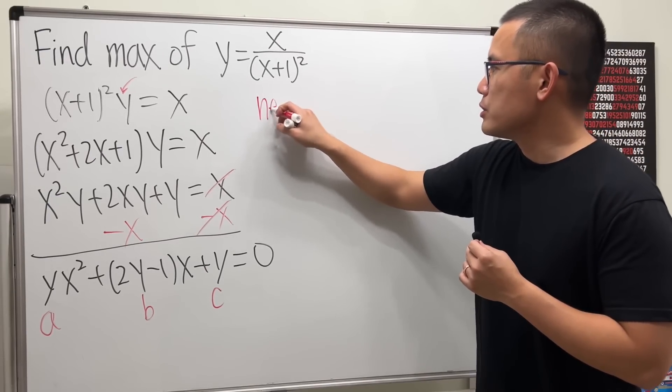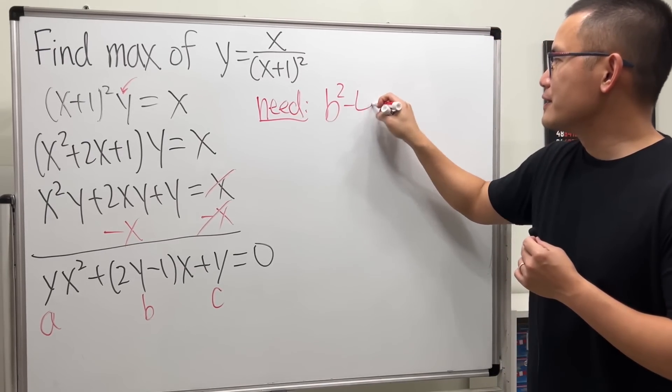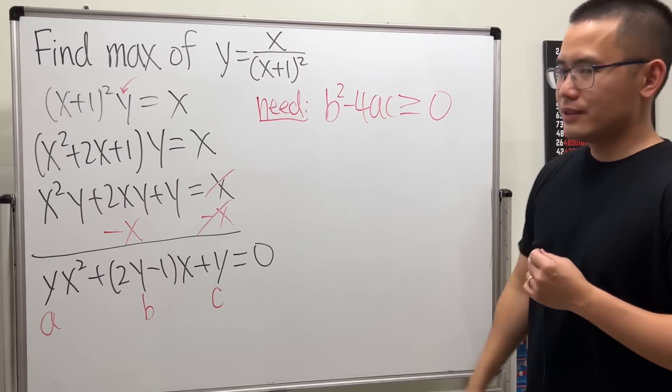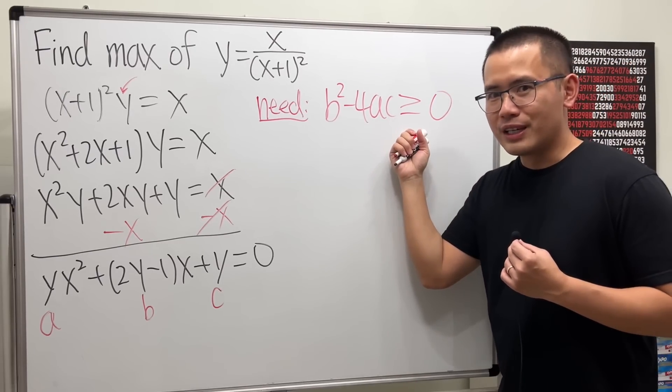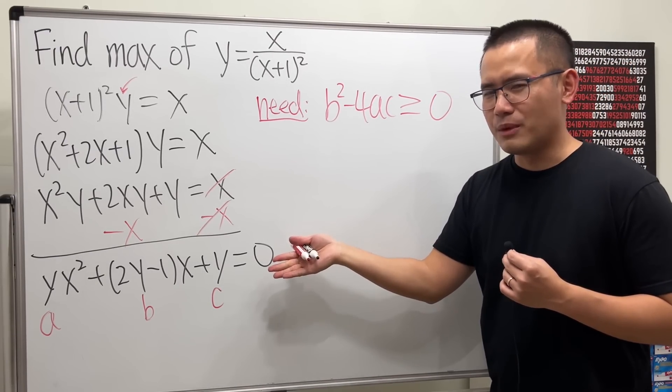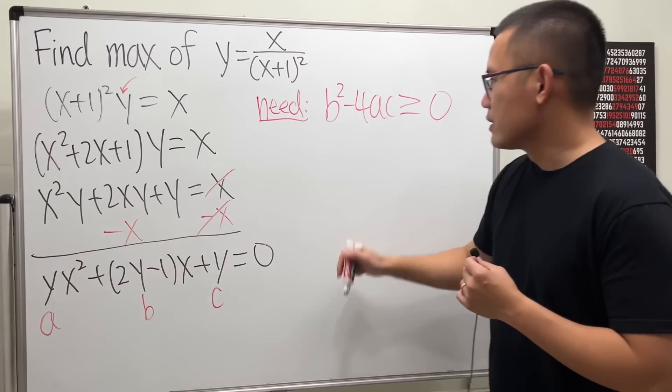...namely, let me just write this down. We need b² minus 4ac to be greater than or equal to 0. So, we can come with an inequality in terms of y, and that will tell us the maximum, hopefully. Now, b squared is this guy's square, so let's just work that out.